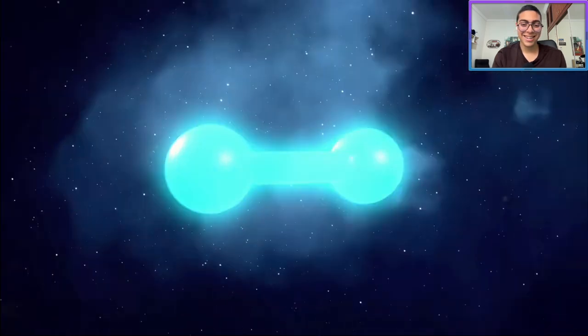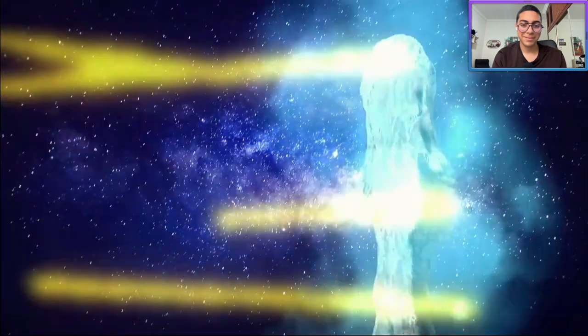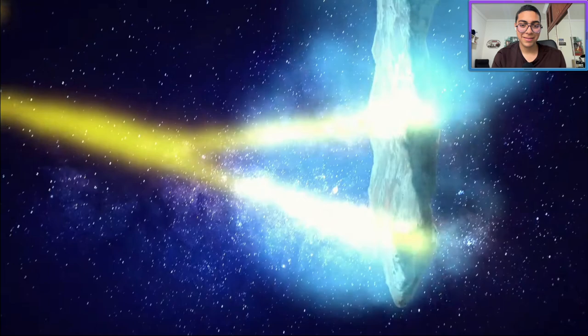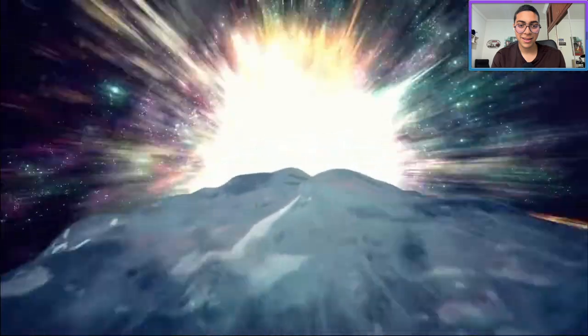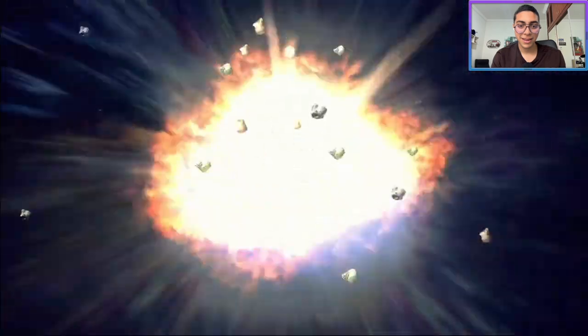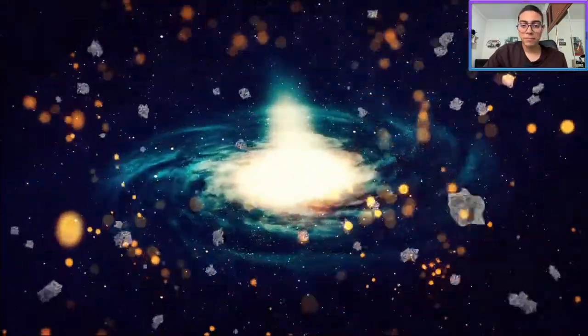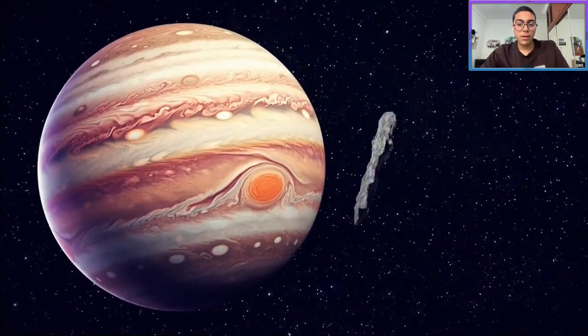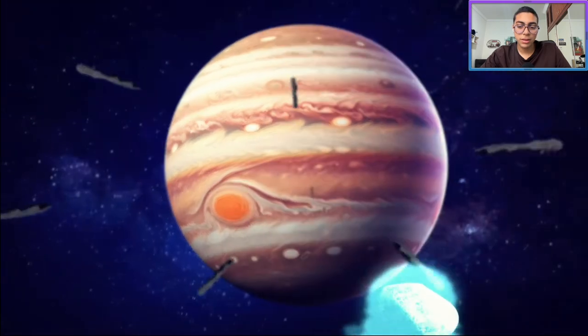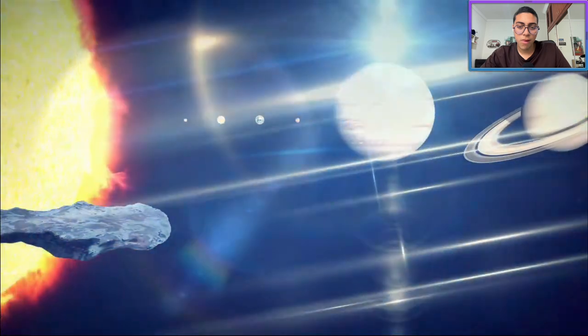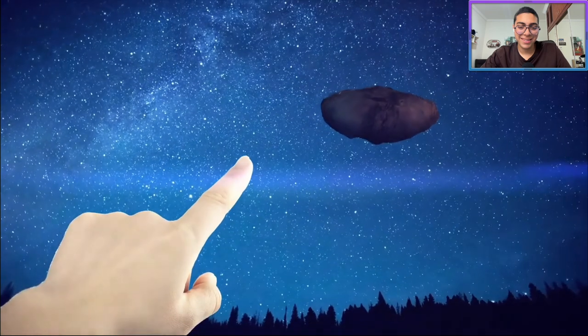Oumuamua likely got all that hydrogen from being exposed to tons of cosmic rays for a long time. It was a visitor from a young chaotic solar system where collisions and migrations happen all the time. It might have been pushed out by a planet like Jupiter, whose gravity is so insanely strong that it can fling huge things into outer space. The same thing often happens with comets here. Oumuamua already left our solar system.